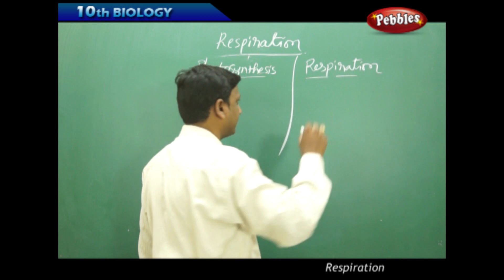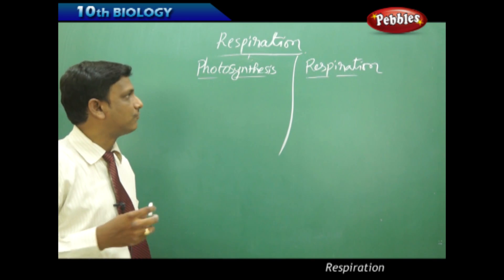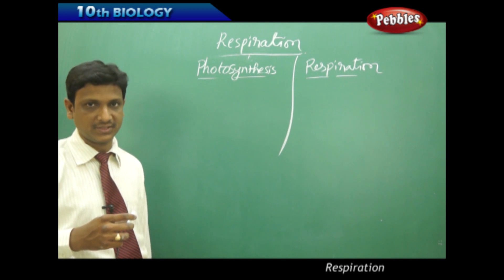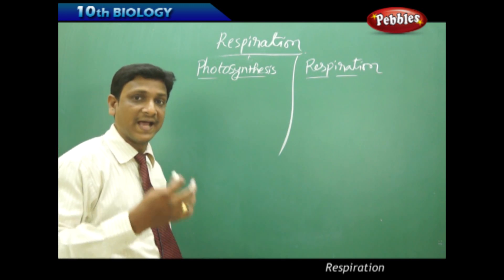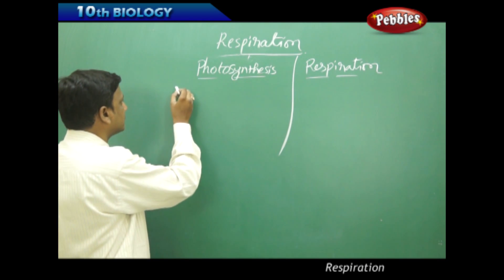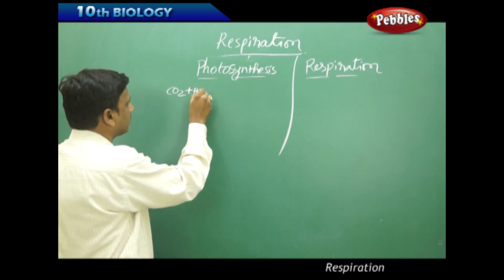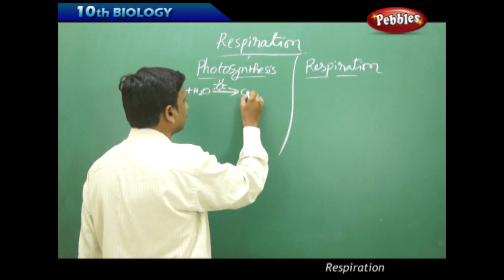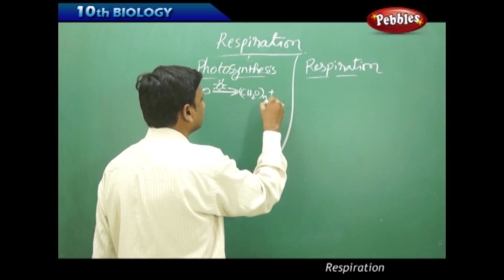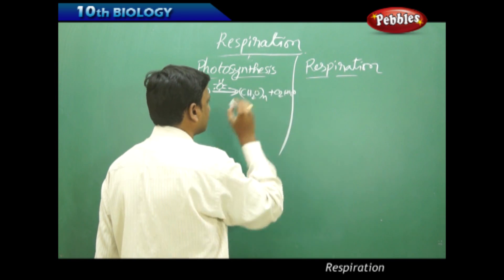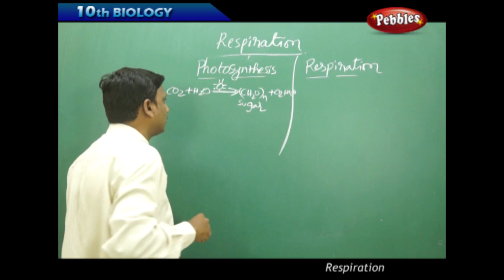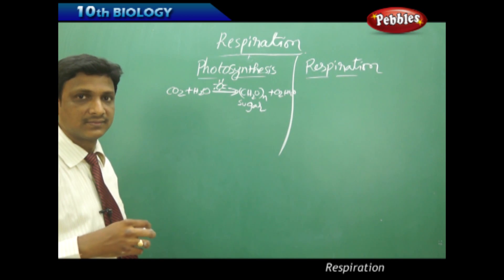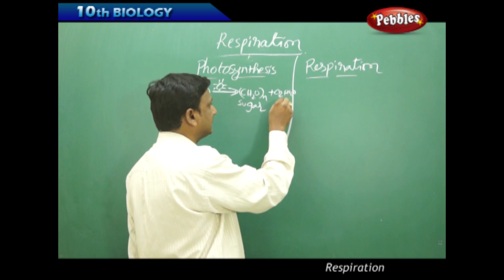Now let us look at the difference between photosynthesis and respiration. These two are very important biological processes that make life possible on this planet. Photosynthesis is a process that fixes solar energy into chemical energy. In photosynthesis: carbon dioxide plus water, in the presence of sunlight, gives rise to sugar plus oxygen plus water. The raw materials are carbon dioxide and water, and the product is sugar while oxygen gas is released.